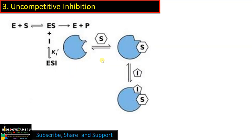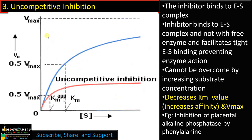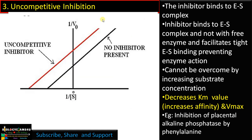The final type is uncompetitive inhibition. Here the inhibitor binds to the enzyme-substrate complex, preventing product formation. This cannot be reversed by adding more substrate. In the Michaelis-Menten graph, both Vmax and Km decrease compared to the uninhibited reaction. In the Lineweaver-Burk plot, uncompetitive inhibition is easy to identify because there are parallel lines. The Km value decreases, indicating increased affinity for the substrate, while Vmax also decreases. A classical example is inhibition of placental alkaline phosphatase by the amino acid phenylalanine.